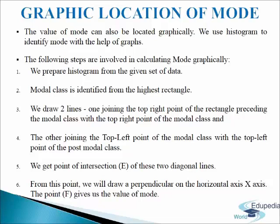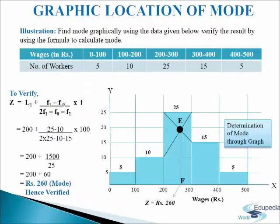Now let us understand this with the help of an example. We have to find out mode graphically using the data given below, and we will verify the results by using the formula. In the data we are provided with wages and number of workers. First, we will draw a graph and plot the data on it — preparing a histogram from the given set of data. The modal class is identified from the highest rectangle, which has a frequency of 25 and comes under the class interval of 200 to 300.